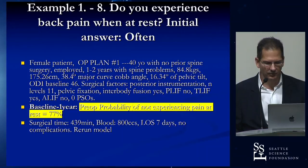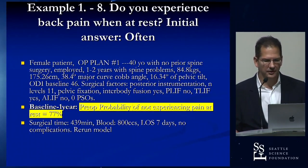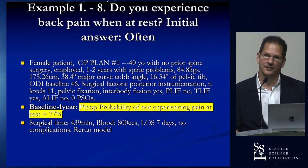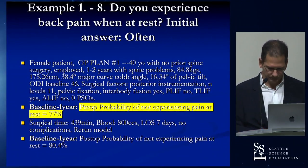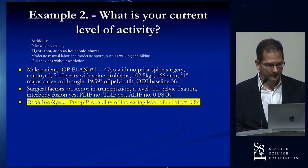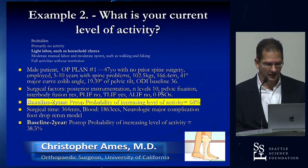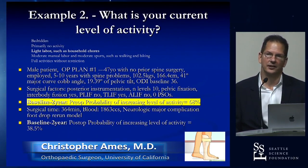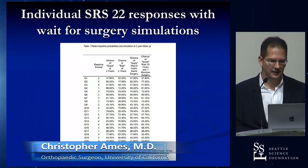Here are examples of simulations. A 40-year-old female with no prior spine surgery wanted improvement in back pain at rest — pre-op model gives a 77% chance; after surgery went well, the model reruns at 80%. Another patient wanting to improve their current activity level had a close to 70% chance pre-op, but the patient had a foot drop intraoperatively and prior to discharge the chance of improving activity level dropped to less than 50% — we can rerun the model and adjust patient expectations based on real-time data.